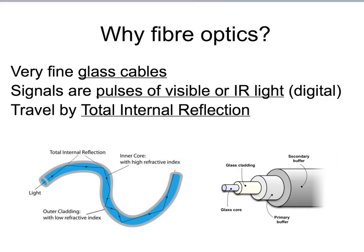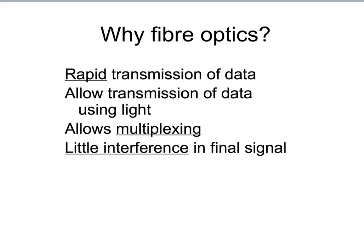If you have cable TV or get your internet using Virgin Media, then you receive your signal down one of these, which is an optical fibre. Optical fibres carry digital signals. They are very fine glass cables, and the digital signals sent along them are pulses of visible light or pulses of infrared. The signal travels along the optical fibre by total internal reflection. Fibre optics carry information at very high speed, so they're great for high-speed internet. They allow transmission of data using light, they allow multiplexing so more than one signal can be carried at the same time, and there's little interference, giving very good signal quality.